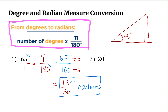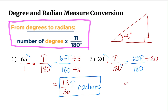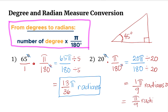Now let's try number 2. We are going to multiply by pi over 180 degrees. This cancels the degree measure, and so we are left with 20 pi over 180. We can use our calculator to simplify, or we can think about what divides both numbers evenly — that should be 20. So 20 divided by 20 is 1, and 180 divided by 20 is 9. So 1 over 9 pi radians, or since the numerator is 1, we can write pi over 9 radians. So 20 degrees is equal to pi over 9 radians.